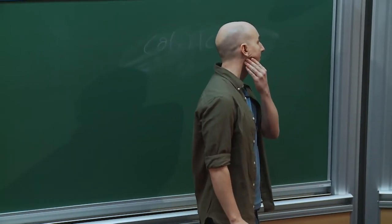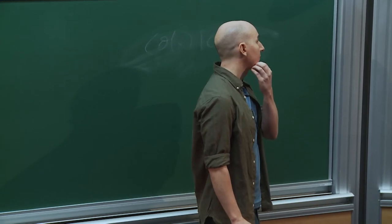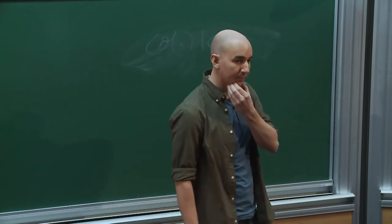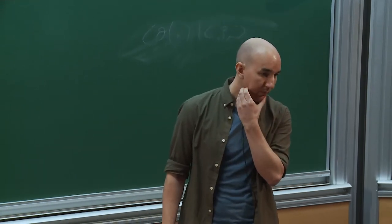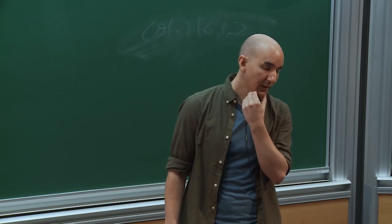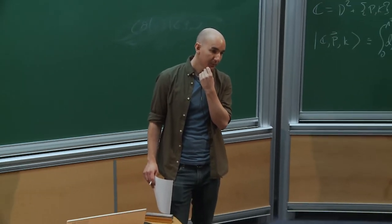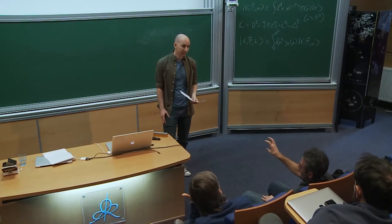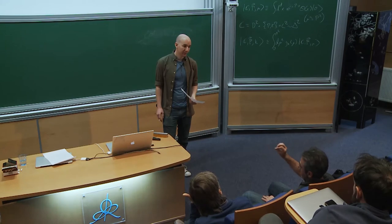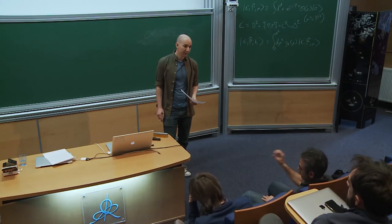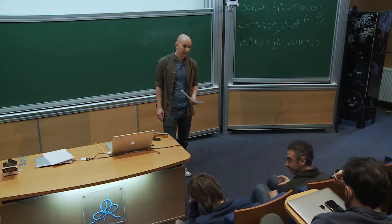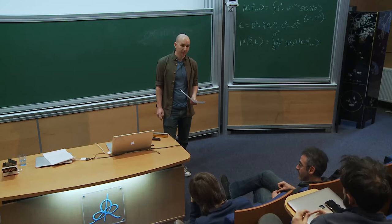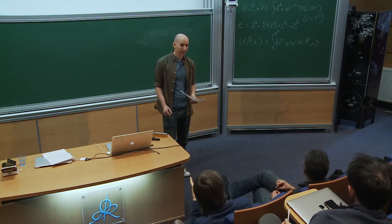Now we do Hamiltonian truncation with this basis. Starting from a CFT deformed by a relevant operator, the Hamiltonian is just the original CFT Hamiltonian — whose eigenstates our basis states are by construction — plus a deformation from the relevant operators added. The only hard part is computing matrix elements of the correction to the Hamiltonian. Since the deformation is a local CFT operator and external states are Fourier transforms of local operators, these matrix elements are just Fourier-transformed three-point functions.